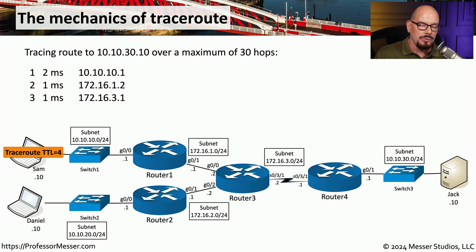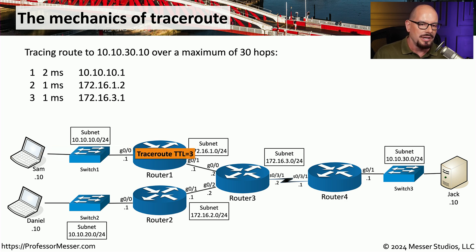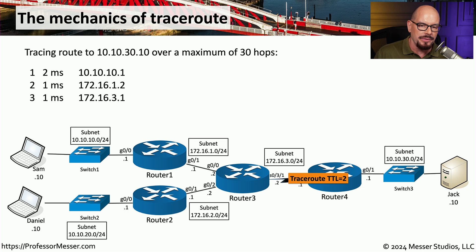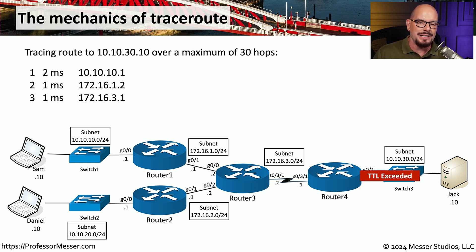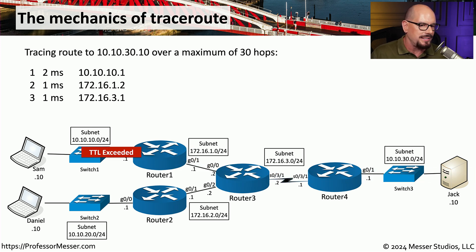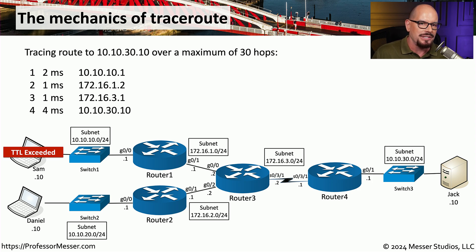The TTL is set to four, and the same process occurs — decreasing through each router — until it finally reaches the destination workstation. Jack's workstation decreases the TTL by one and sends back a TTL exceeded message all the way to Sam's workstation, and that information is added to the traceroute results.